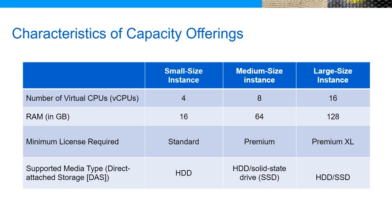Customers can achieve further performance improvements by applying an ONTAP Select premium XL license. The premium XL license enables deployments of small, medium, or large-sized instances. This license also enables the same options as a premium license. Note that software RAID deployments require the use of SSDs. Therefore, only premium or premium XL licenses can support software RAID deployments.